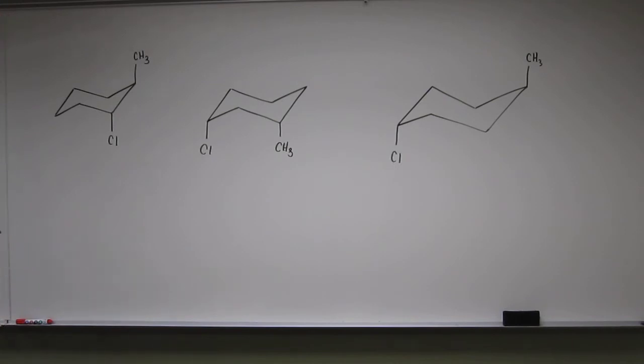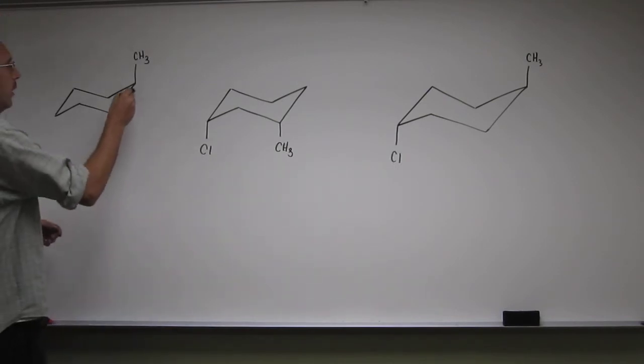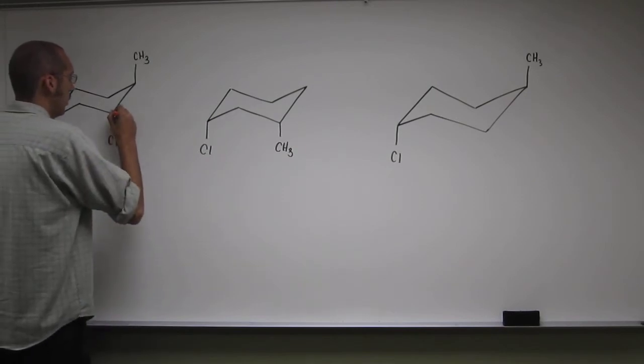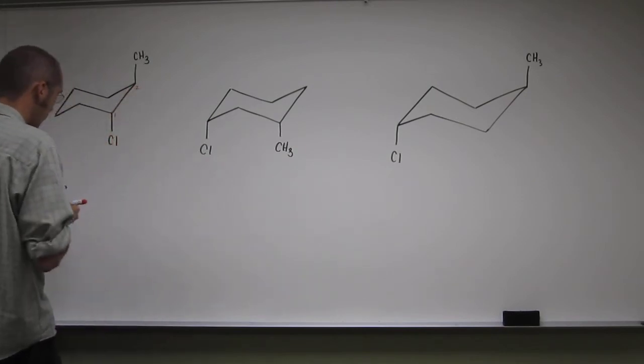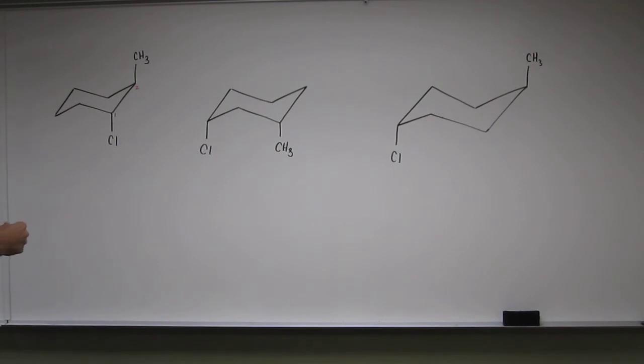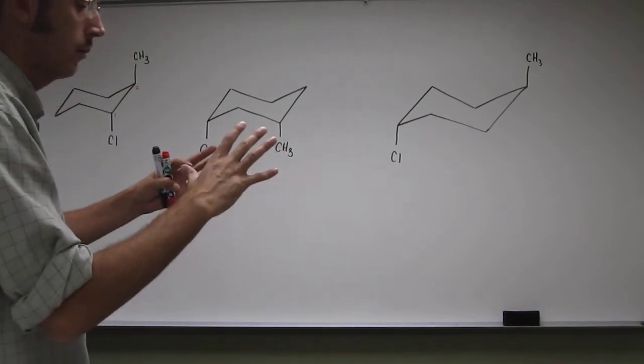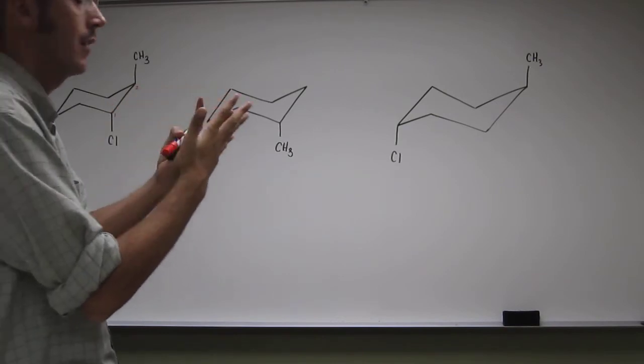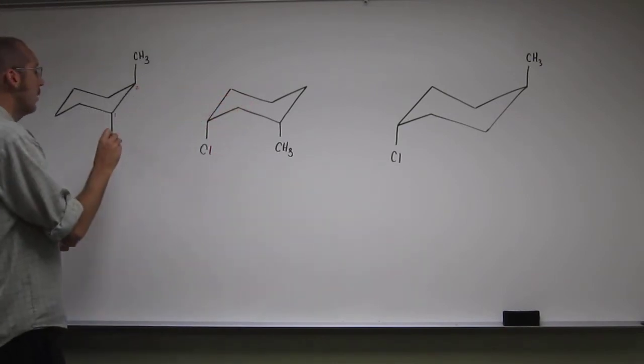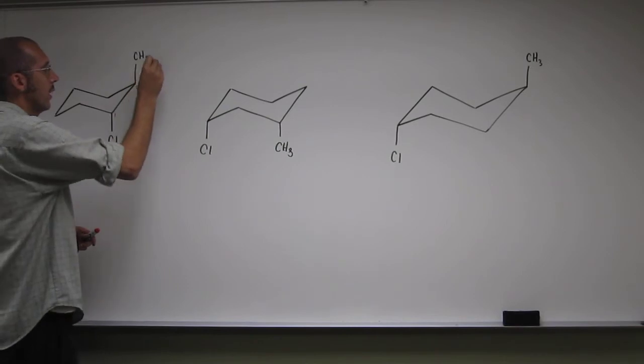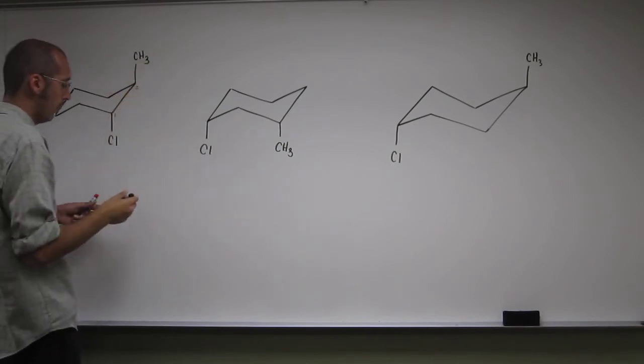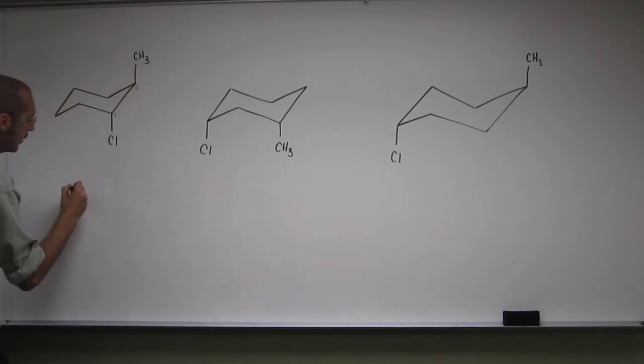Here we have in the 1,2 positions both of the substituents are axial. Now remember when we have axial substituents that are close to each other they knock into each other and they have that steric interaction - steric meaning where two things are trying to occupy the same space at the same time. So here we have two axial substituents on carbons that are adjacent to each other but remember they're on opposite sides of the ring.